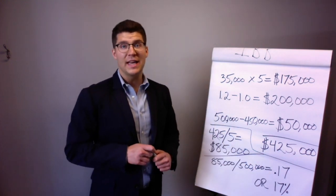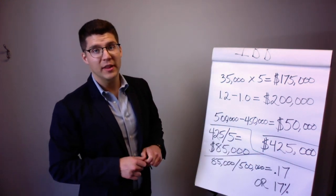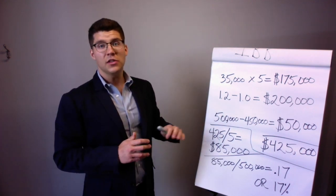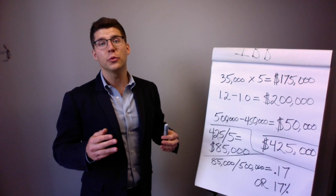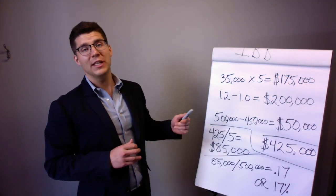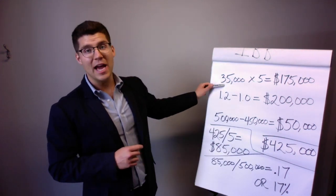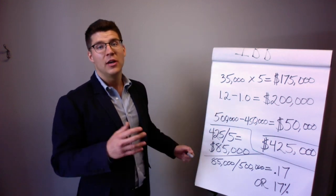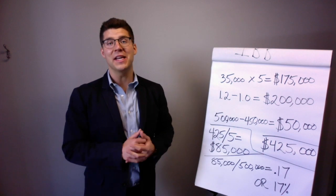So taking into account the three primary ways that real estate makes you money—cash flow, appreciation, and mortgage principal pay down—we get a total return of 17% per year.